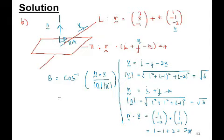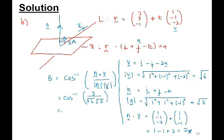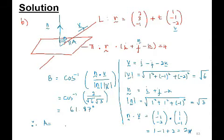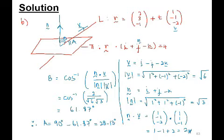So angle B = arccos(2 / (√6 · √3)) = arccos(2/√18), which gives 61.87°. But remember, this is angle B. Therefore, the angle A between the line and the plane is 90° − 61.87° = 28.13°. This is the angle between a line and a plane.